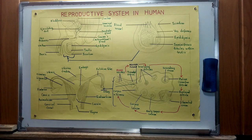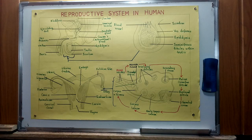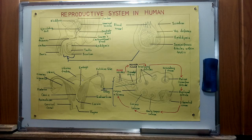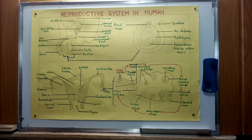The fallopian tube is the part through which the egg passes down after being released from the ovary. The inner lining of this oviduct contains cells referred to as cilia. These are the structures on the inner walls of the fallopian tube that assist in propelling the egg towards the uterus as it moves down from the ovary. The uterus is a thick-walled muscular organ in which the development of the fetus takes place, and it is attached to the pelvic cavity by a broad ligament.